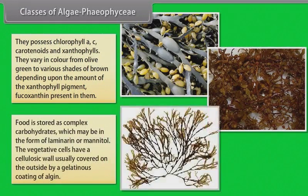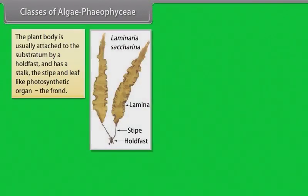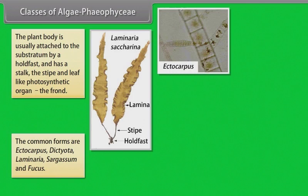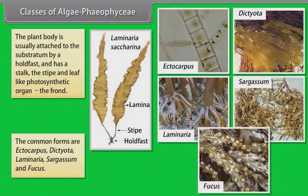Food is stored as complex carbohydrates which may be in the form of laminarin or mannitol. The vegetative cells have a cellulosic wall usually covered on the outside by a gelatinous coating of algin. The plant body is usually attached to the substratum by a holdfast and has a stalk, the stipe and leaf-like photosynthetic organ, the frond. The common forms are ectocarpus, dictyota, laminaria, sargassum and fucus.